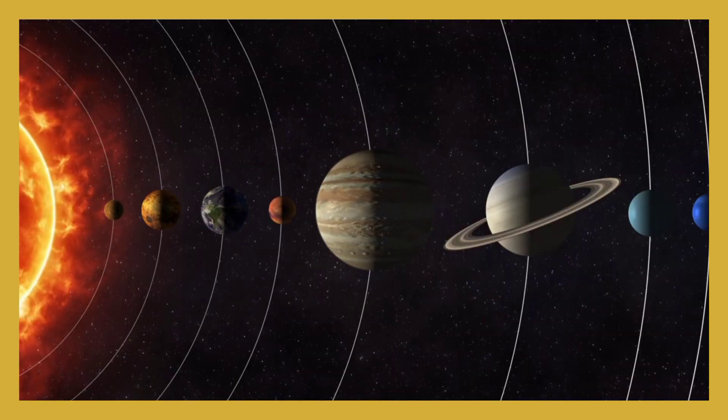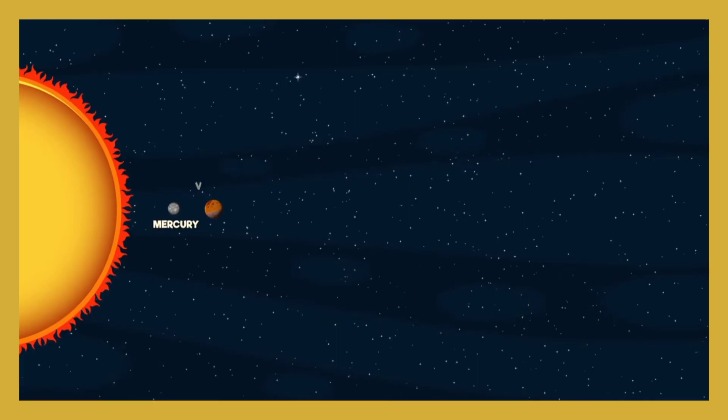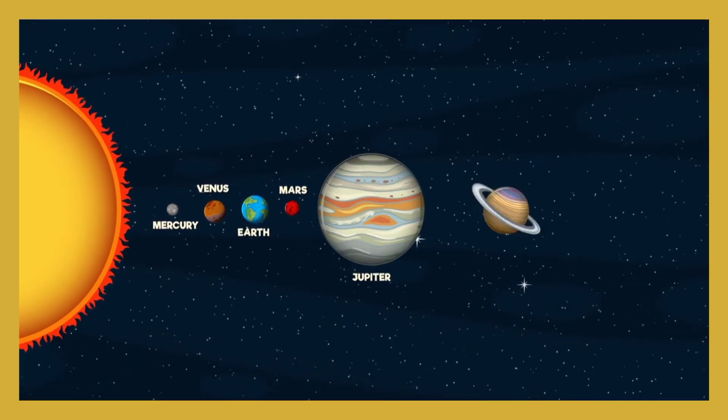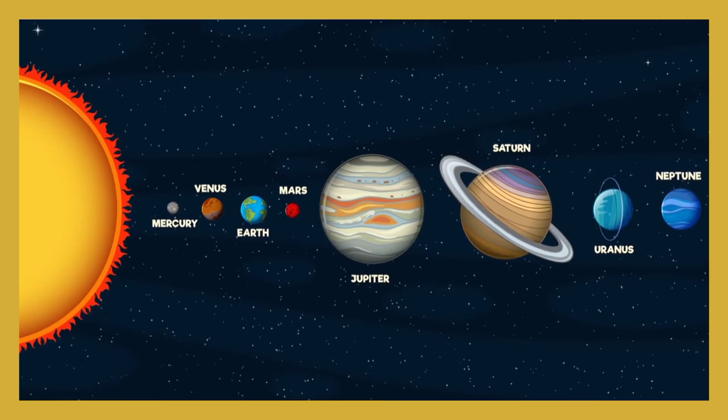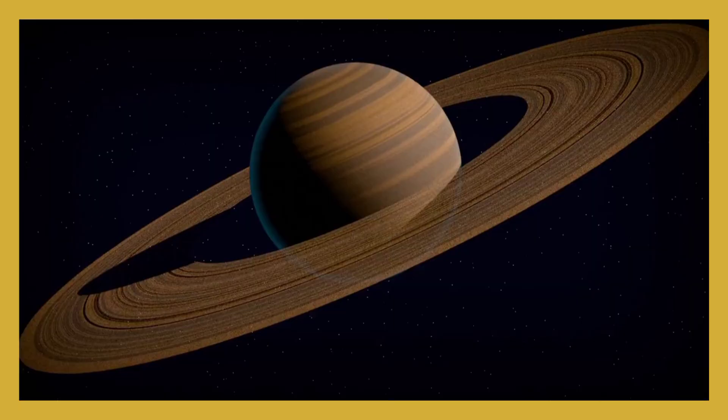Round and round the planets go, spinning fast or spinning slow. Moons and rings and asteroids too, there's so much in space to view.